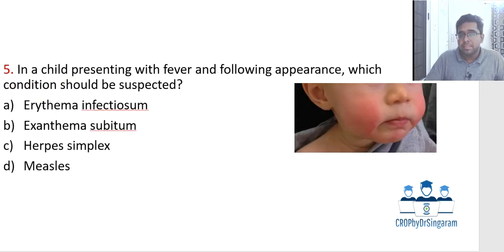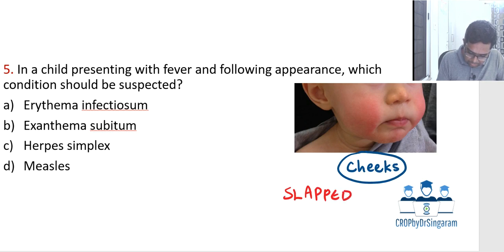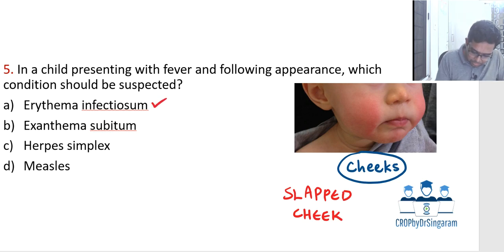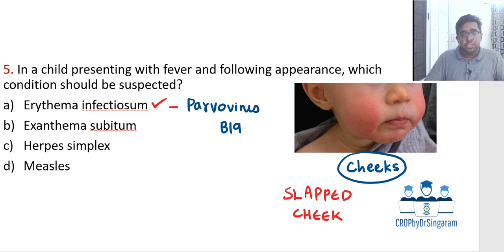The next question: a child presenting with fever and a particular facial appearance — redness especially in the cheeks — what condition should be suspected? This is what we call slapped cheek appearance. This is associated with erythema infectiosum, a classical infectious condition caused by parvovirus B19. In erythema infectiosum, the initial presentation is fever and viral prodrome such as upper respiratory infection. Two to three days after the fever, the child starts to develop the characteristic slapped cheek appearance, which initially starts in the face and cheeks.